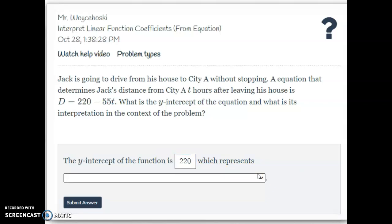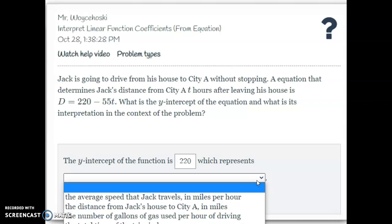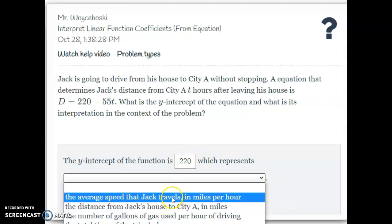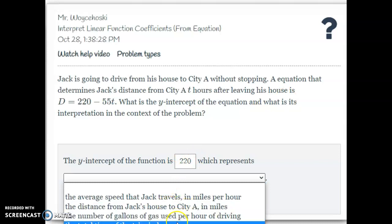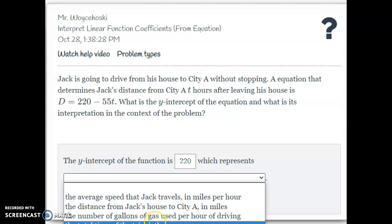And so your job is just to look at the equation, mine it's D equals 220 minus 55t, and say okay of these two numbers which one of them is the y-intercept. Well remember the y-intercept is the number by itself, the constant. So that means the y-intercept of this one is 220 and then it's going to give you a multiple choice question of what does that represent. Now I do know that you guys will get different problems, it won't be exactly like this, but it's all going to be kind of the same setup.